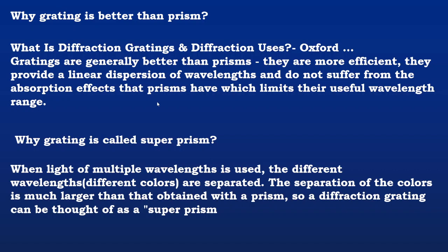Why grating is called super prism? When light of multiple wavelengths is incident on the prism, the different wavelengths are separated. The separation of the colors is much larger than obtained with a prism. So diffraction grating can be thought of as a super prism, and this process is also known as dispersion.